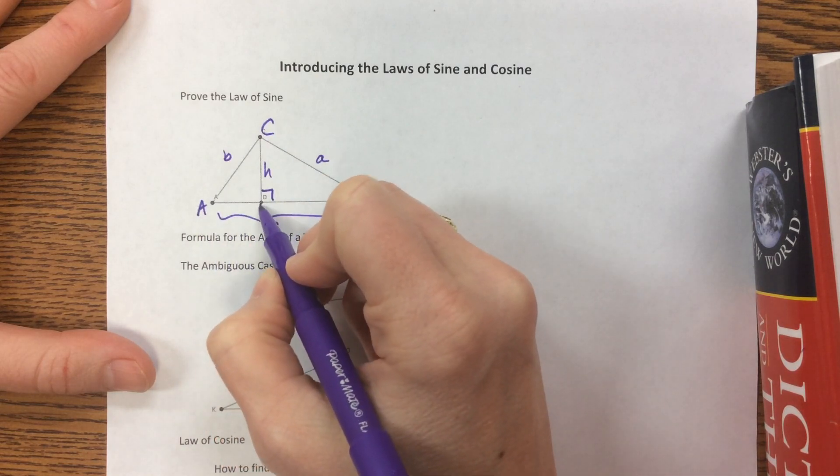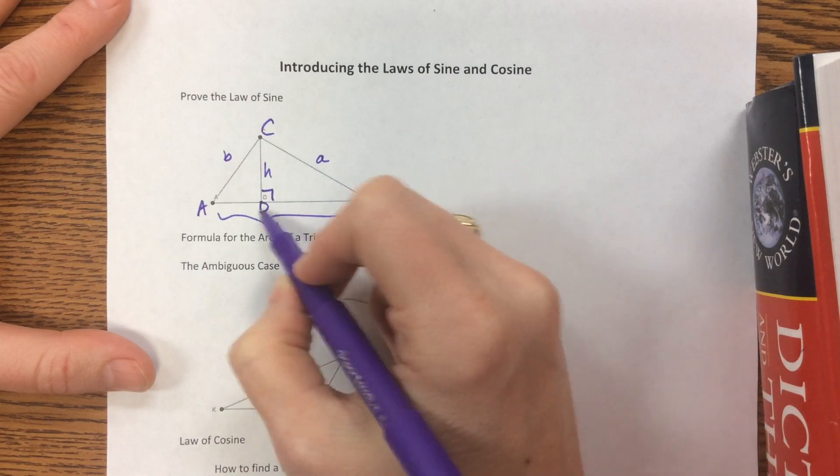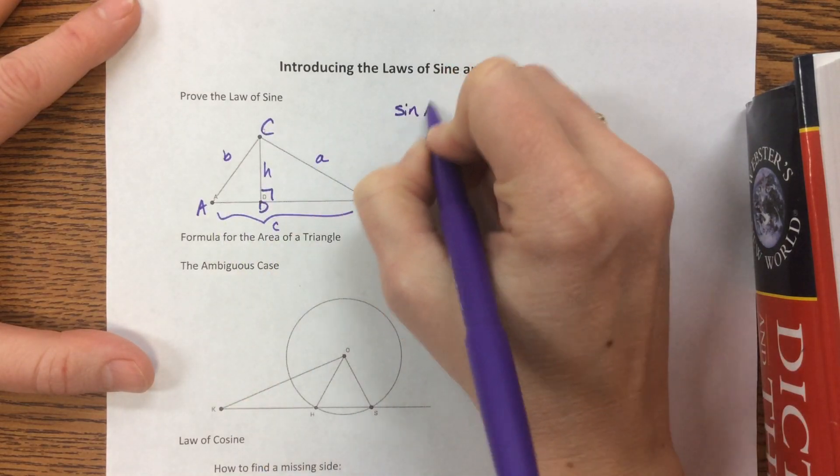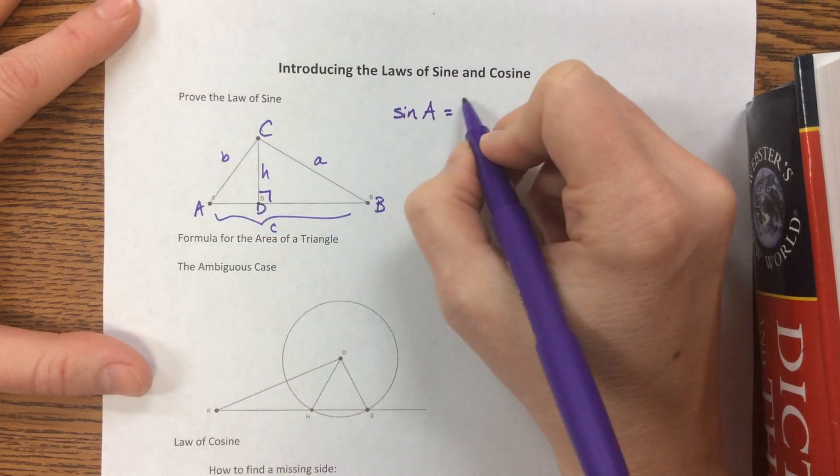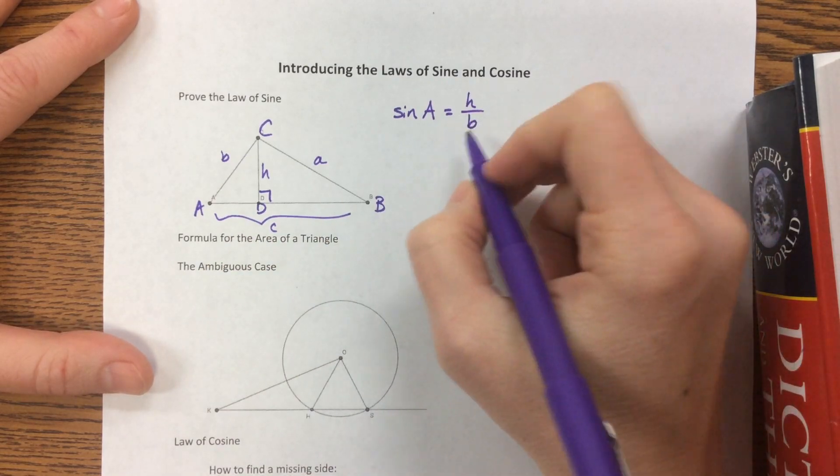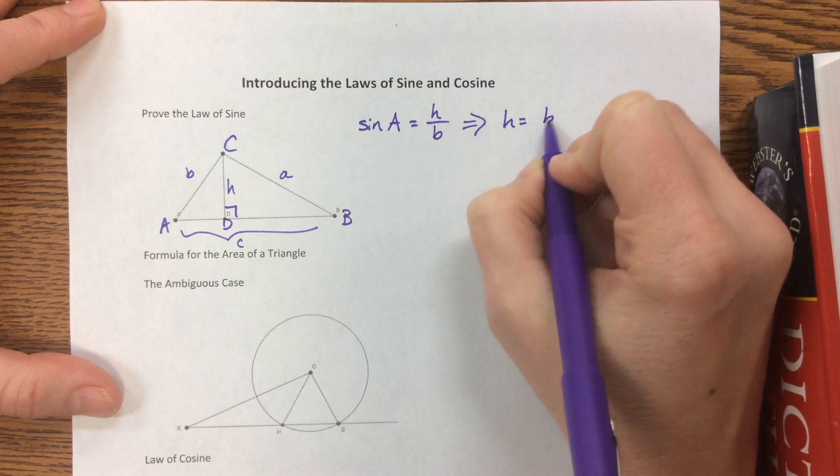I've got triangle A, this is point D if you can't see it, ADC, and then triangle BDC. So looking at sine of A would be equal to, in this triangle, h over B, because it's the opposite over our hypotenuse. And that implies that h would be equal to B times sine of A.